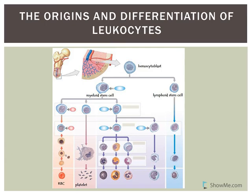All blood cells originate from the red bone marrow — in adults mostly from flat bones. All blood cells originate from hemocytoblasts. From there, we get two stem cells: myeloid stem cells or lymphoid stem cells. All of the formed elements of the blood, except for the lymphocytes, come from myeloid stem cells. Lymphocytes are the only ones that come from lymphoid stem cells.